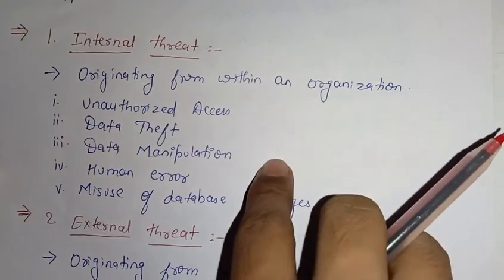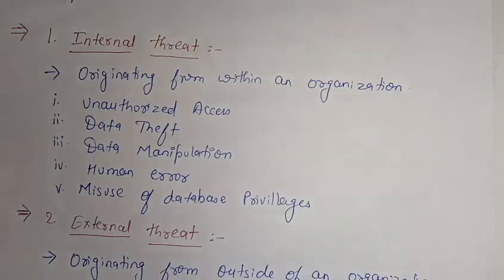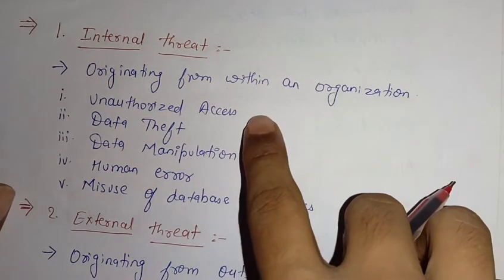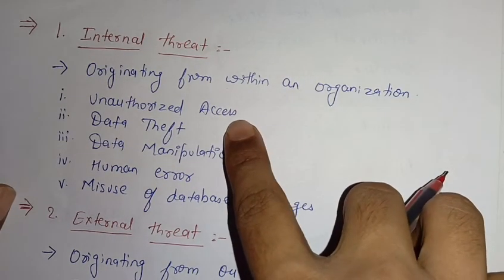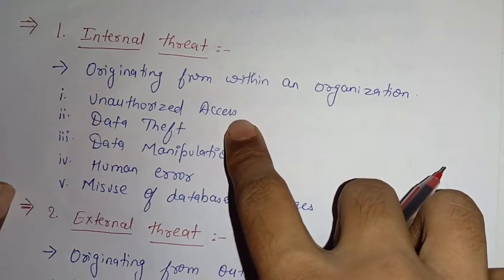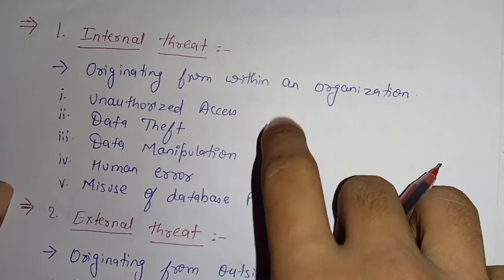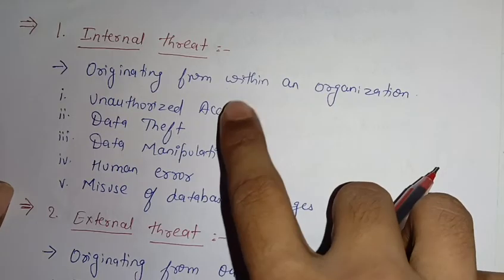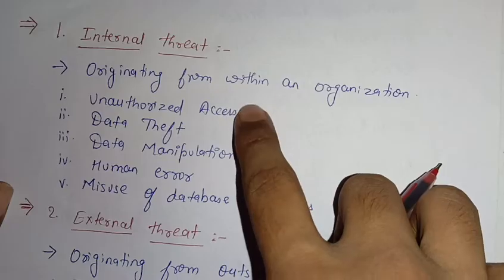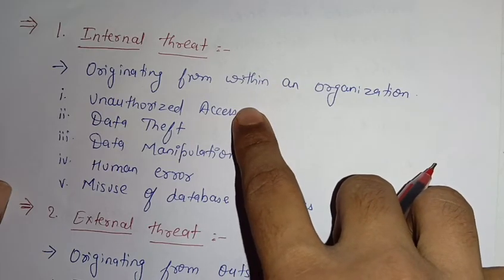There are five possibilities from which this threat can occur. The first one is unauthorized access — they are having certain boundaries or fields within which they have access, but when they are trying to get into an area where they do not have access, that means there is unauthorized access, and in that case there is an internal threat and a breach of security.